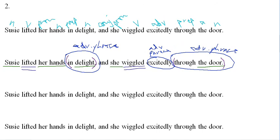Now let's jump back a step and take care of those adjective phrases. Remember when we talked about the pronoun 'her' — we said it's a possessive pronoun, and possessive pronouns work as adjective phrases. So we're going to circle that and label it as an adjective phrase. And looking further, I've got an article here. We don't want to leave out those lone articles, so we label that an adjective phrase as well.